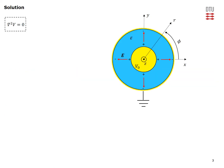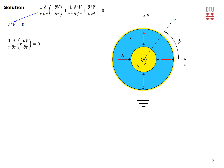Here is the cross-sectional view of our configuration. The objective is to determine the potential distribution in our dielectric, which is free of any charges. The relevant equation is, of course, the Laplace equation. Since we are working with cylindrical coordinates, this is the Laplacian operator in the cylindrical coordinate system. Our potential does not vary as a function of phi and z, so those two derivatives are equal to zero.